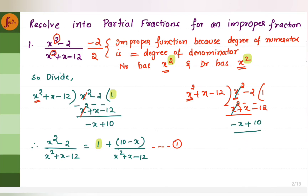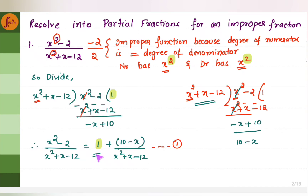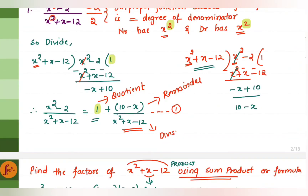The quotient is 1. We put the quotient here and add it with the remainder. The remainder we have is minus x plus 10, or we can write this as 10 minus x. So we have 10 minus x divided by whatever we divided with, which is x squared plus x minus 12. This 1 is the quotient, this is the remainder, and this is the divisor.